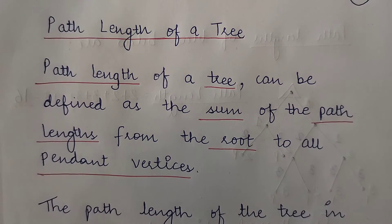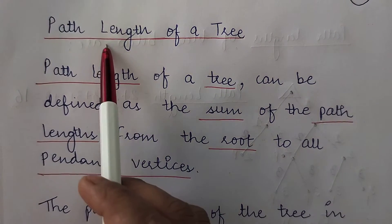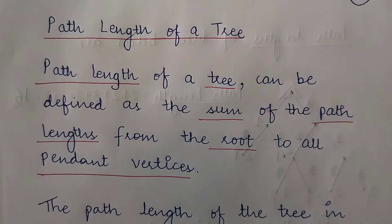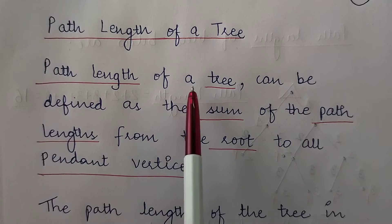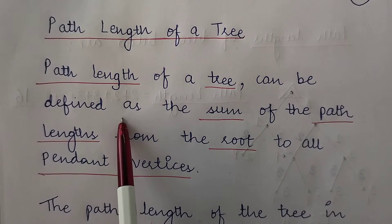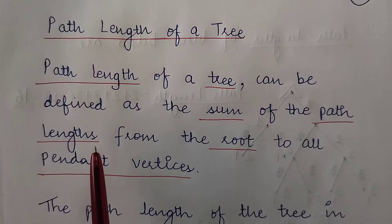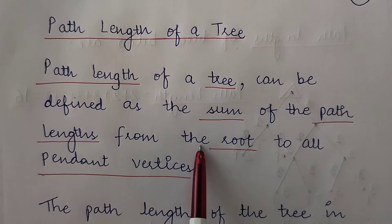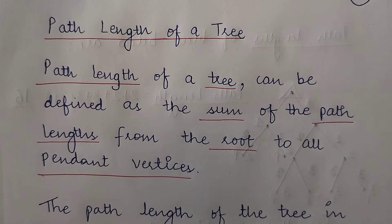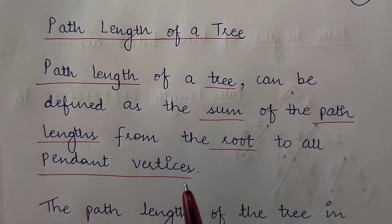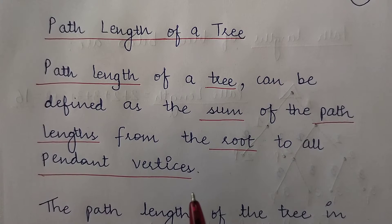Hi everyone, today we are going to study the path length of a tree. The path length of a tree can be defined as the sum of the path lengths from the root to all pendant vertices. In simple language, it is the length of the path of all the pendant vertices starting from the root till the pendant vertices.